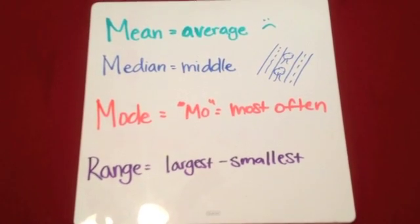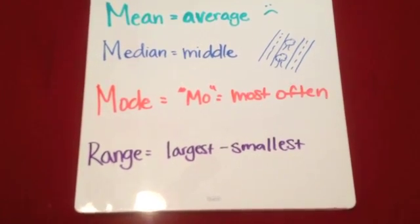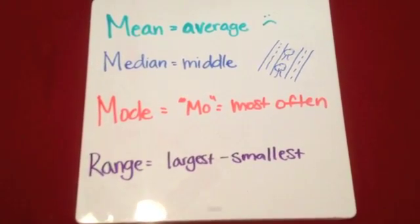The mean, median, mode, and range are all measures of central tendency. And they can all be used to help describe a set of data.